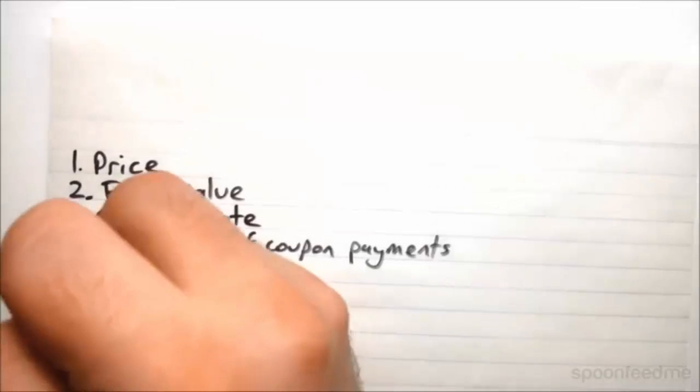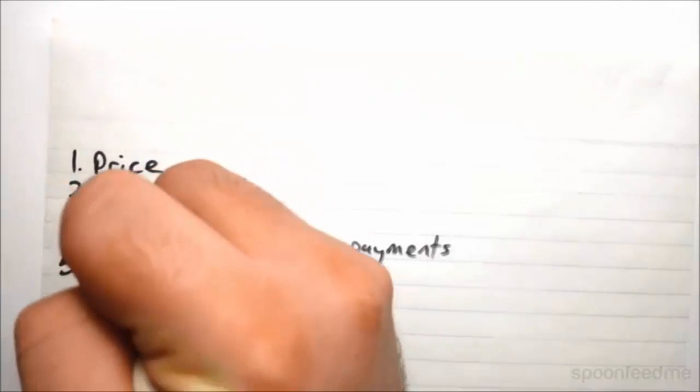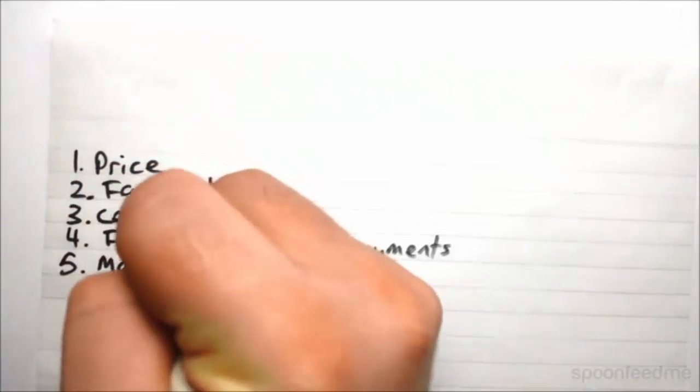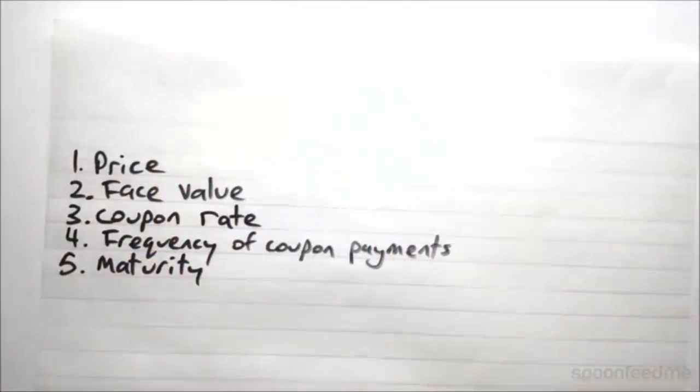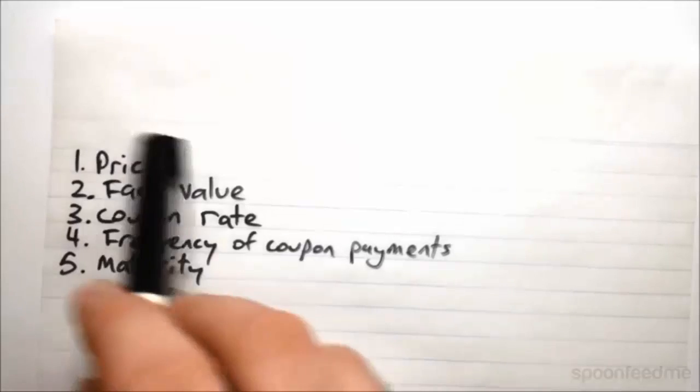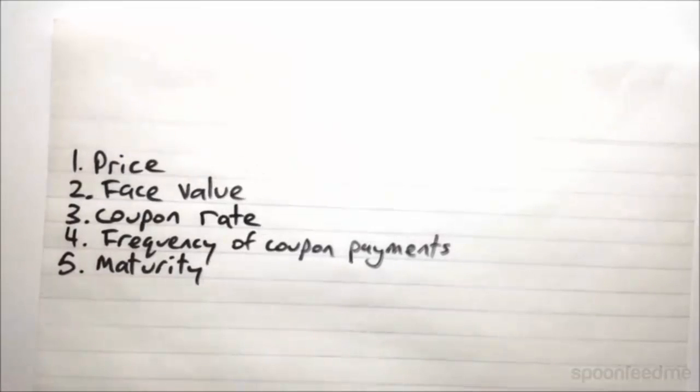And then finally you've got your maturity. So how long does the bond last? How long will it be before you receive the face value and how long will you be taking these payments? So it could be as I've said anywhere between 10 and 30 years. So once you've got all of these things here, you can completely sum up all of the cash flows that are going to be received on this bond.